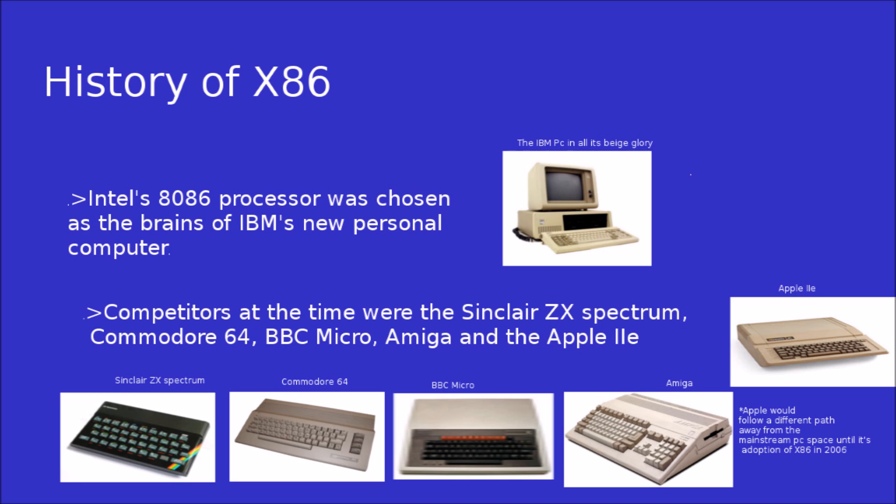How did the x86 processor become the de facto standard in desktops and laptops for the last 30 years? It all comes down to a very simple decision made by IBM in 1981: Intel's 8086 processor was chosen as the brains of IBM's new PC. The advancement of the desktop space led to many competing PCs at the time, such as the Sinclair ZX Spectrum, the Commodore 64, the Amiga, and the BBC Micro, but the IBM PC outsold them all massively, displacing other systems.